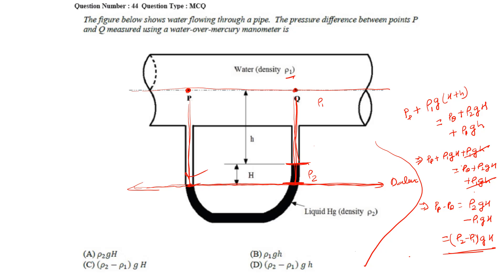The pressure difference is (ρ₂ − ρ₁)gH. The correct option is option T. This is a straightforward manometer problem.